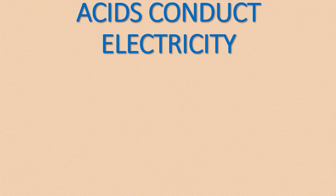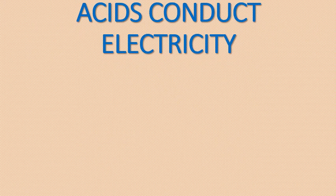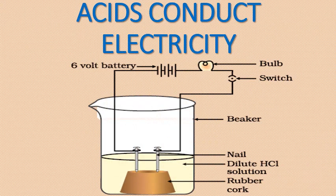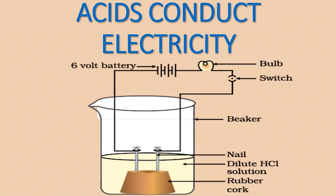Acids are electrolytes. All acids act as electrolytes in aqueous state. It means, koi bhi acid aqueous form mein lenge, toh it will dissociate into ions, so that acid is an electrolyte. Ions electric current ke carrier hote hain. So any acid in aqueous state is an electrolyte that will conduct electricity.